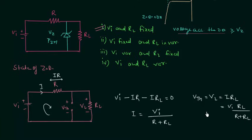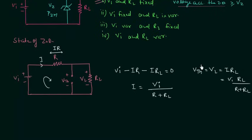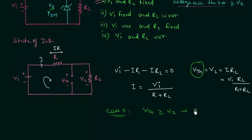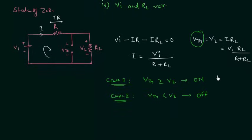We compare VTH with the Zener voltage. There are two cases: if VTH is greater than or equal to VZ, the diode is on and there will be breakdown; if VTH is less than VZ, the diode is off and there will be no breakdown. We will find the values of currents and voltages in both cases. I will start with case 2.